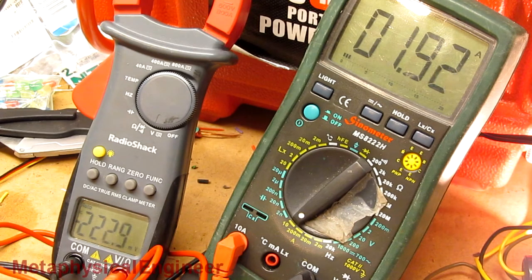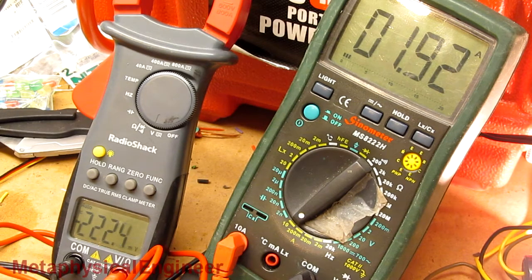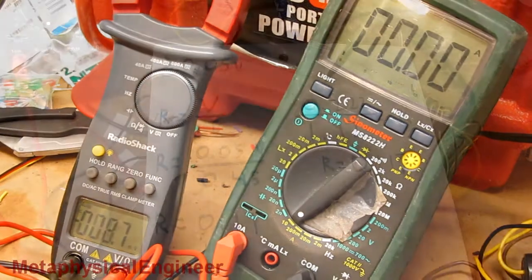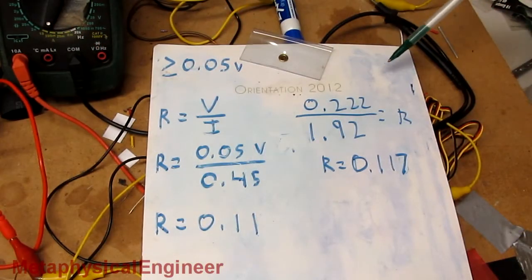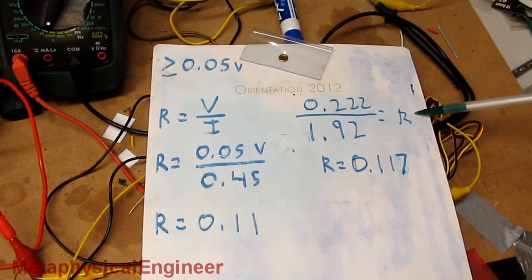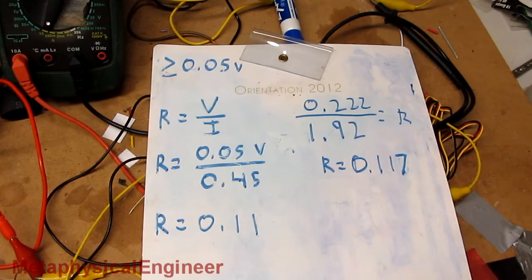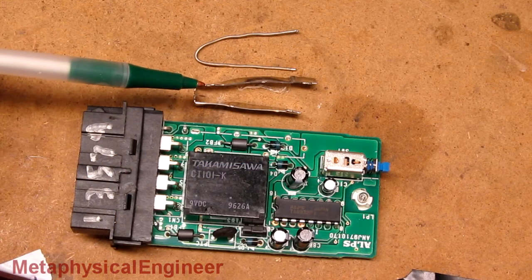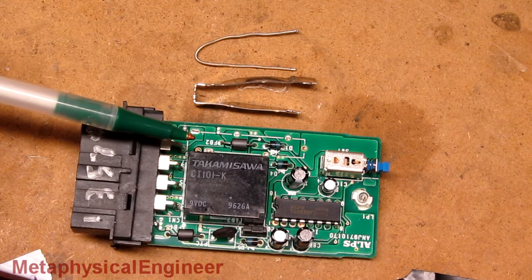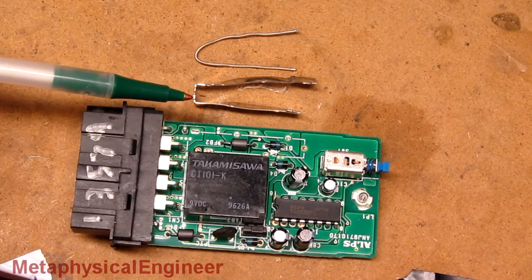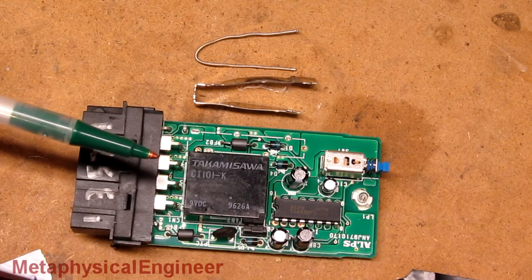1.92 amps, 0.222 volts, 0.222 volts divided by 1.92 amps equals our resistance. So, we got a resistance value of 0.117 ohms. Had to cut the old sensor resistor off, soldering iron was not melting the solder with that much metal as a heatsink. Now time to put the new one in and see if it works.